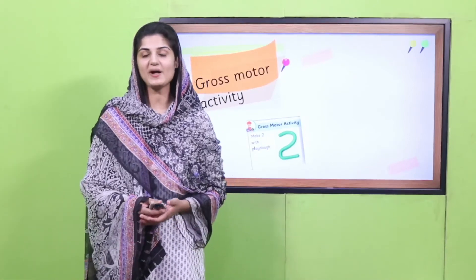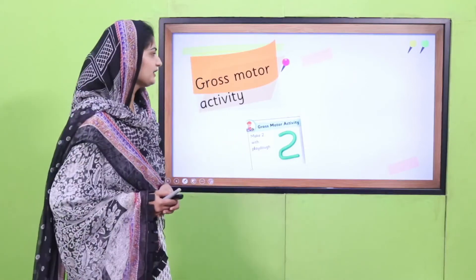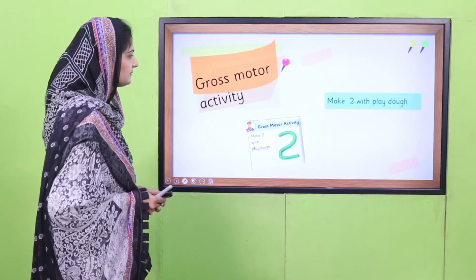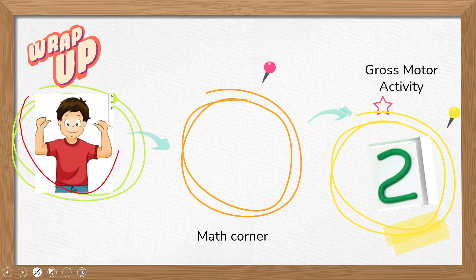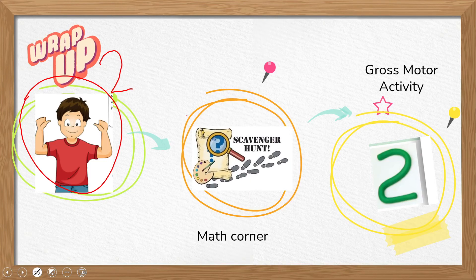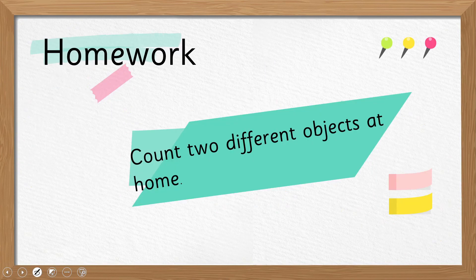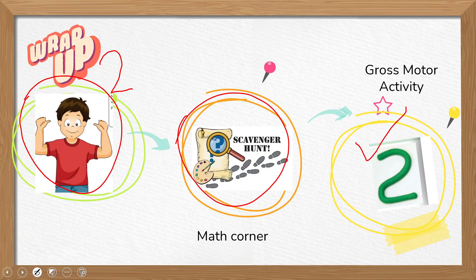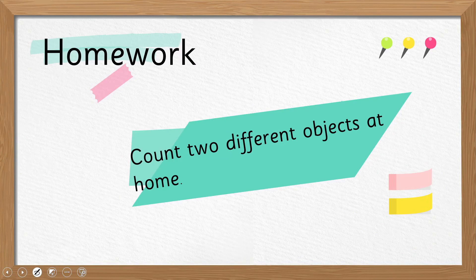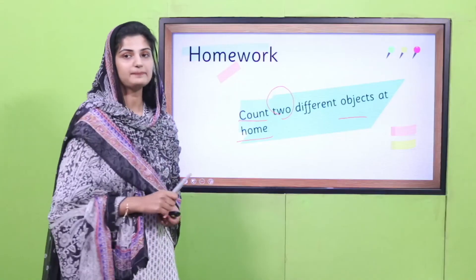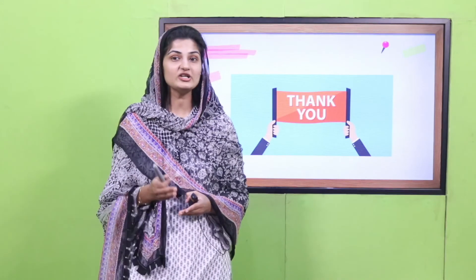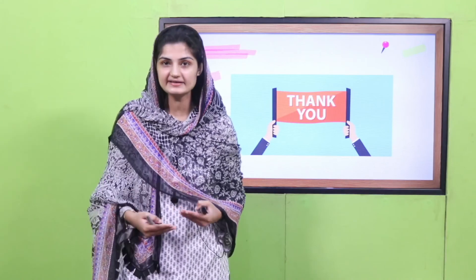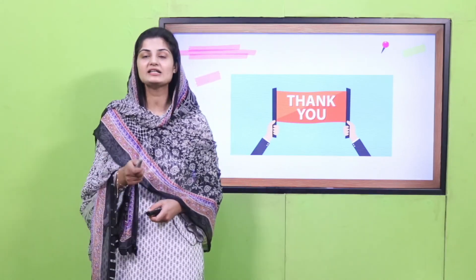Playgroup, hopefully you have come back and made a wonderful number two with the play-doh using your gross motor skills. Now it's time for wrap-up. We counted body parts, learned the formation of number two, did the scavenger hunt, and made number two with play-doh. Your homework is to count two different objects at home — aapne ghar pe dho alag alag cheez dhoondhni hai. With that, our lesson has come to an end. Hopefully you enjoyed the video. If you have extra time, revise the activities as many times as you can. I'll catch you in the next lesson — Allah Hafiz!